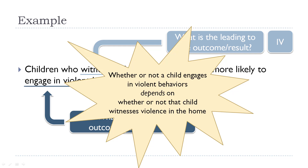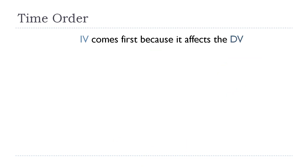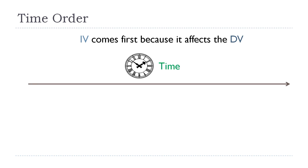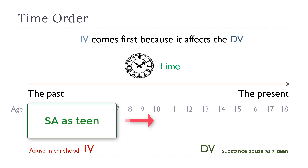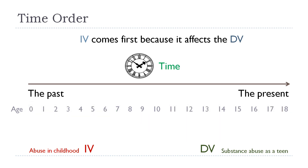One way to identify whether something is an independent or dependent variable involves time. An independent variable always comes first in time because it is the one doing the effecting on the DV. So if we imagine time moving forward — with the past on one side and the present on the other — using the example of children witnessing violence, the abuse in childhood, which is the independent variable, had to come first before the dependent variable, substance abuse as a teen. The abuse had to happen first.